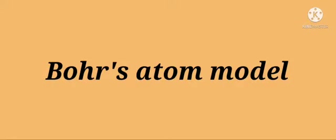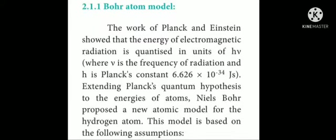The next topic is Bohr's atom model. Due to the failure of Rutherford's atom model, the next scientist Niels Bohr explained a new atom model. The work of Planck and Einstein showed that the energy of electromagnetic radiation is quantized in units of h-nu, where nu is the frequency of radiation and h is Planck's constant with value 6.626 × 10⁻³⁴ joule-second. Extending this quantum hypothesis to atoms, Niels Bohr proposed a new atomic model for the hydrogen atom.